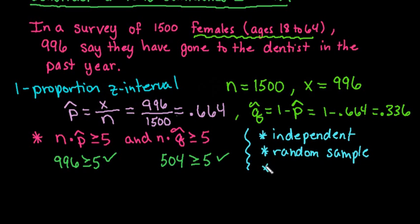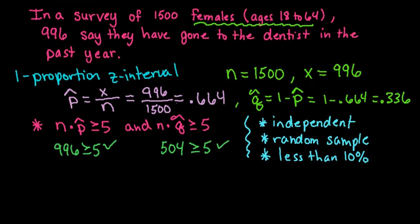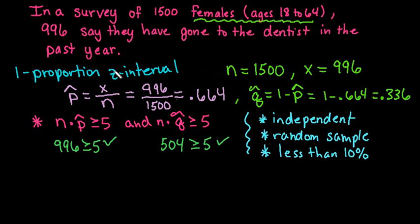And the last one, this is found in some other textbooks that I currently teach from, you have to pull less than 10% of the population. And if we think about it, 1500 is definitely less than 10% of all females ages 18 to 64. So I would just check your assumptions and conditions based on the textbook that you are using. Because the stats textbooks are not at all consistent in how they give the information or the things that they are looking for.